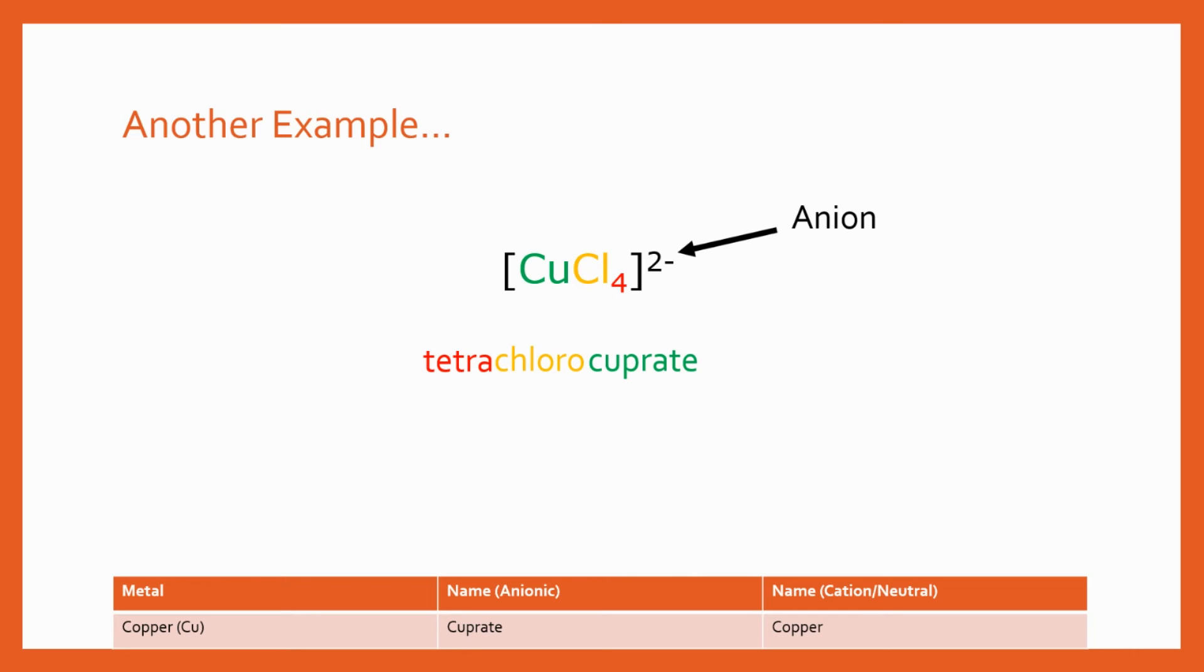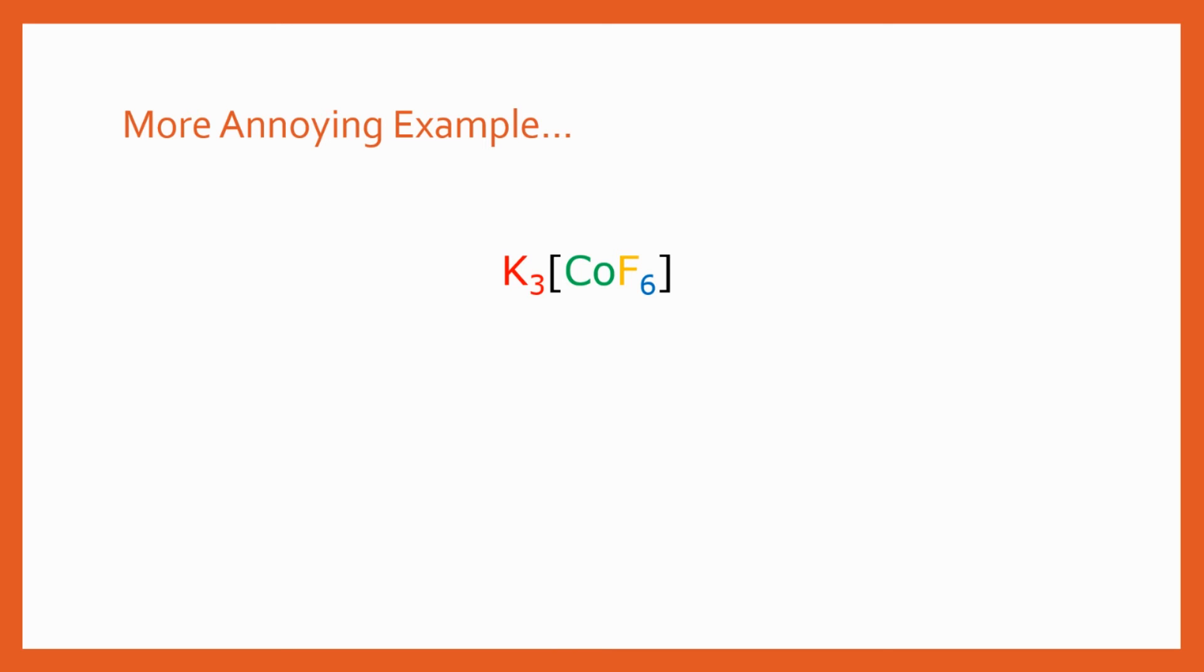And the reason we chose cuprate is because we've got an anion. Now we need to work out the oxidation number and chlorine is going to be minus one and it's all going to sum to minus two. So we get x for the copper plus four times minus one equals minus two. Simple algebra, you can solve that and that means that x is going to be plus two so we get a two there. That's how you do this one—it's basically the same thing, we're just changing from a cation to an anion and getting a slightly different name.